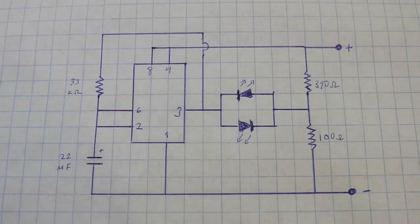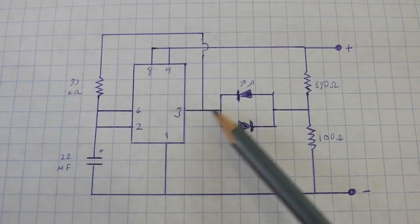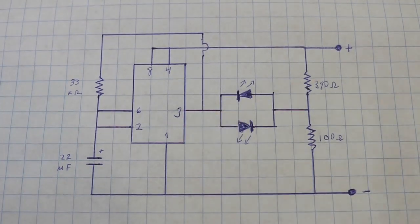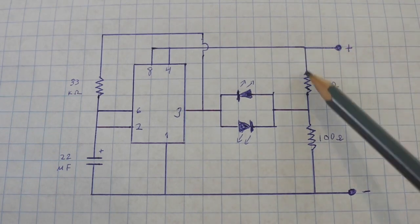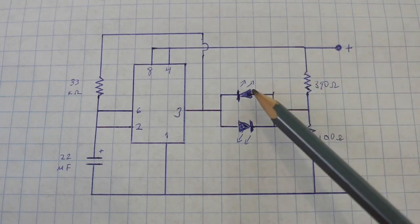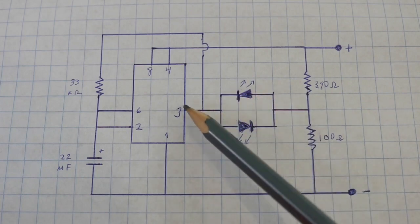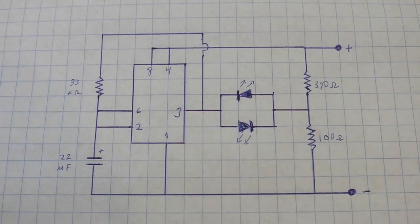Then when the output is low, that is we are at zero volts, then the current flows from positive through this resistor, then to the other LED, to pin 3, and then to ground.